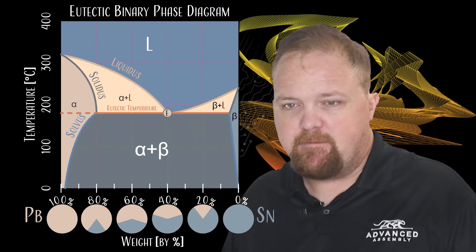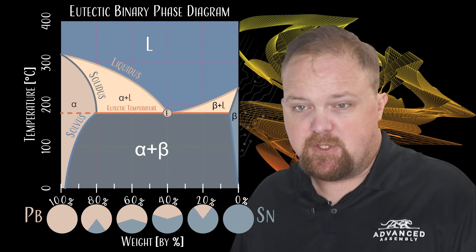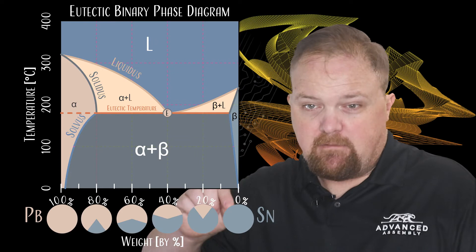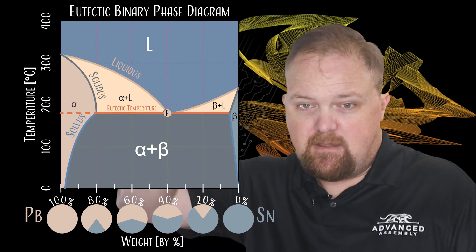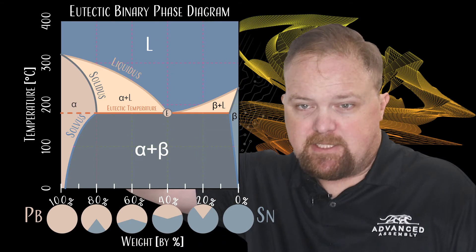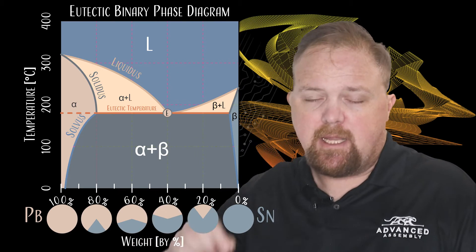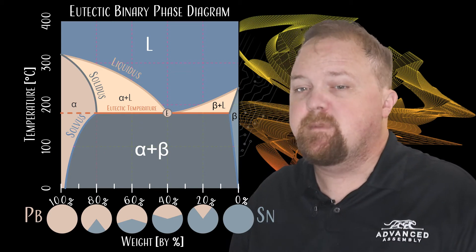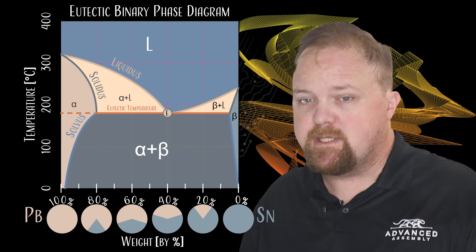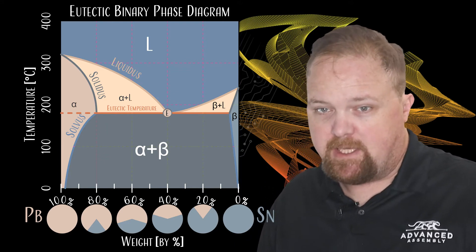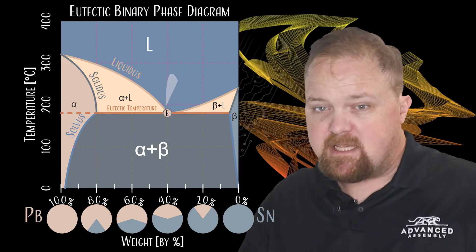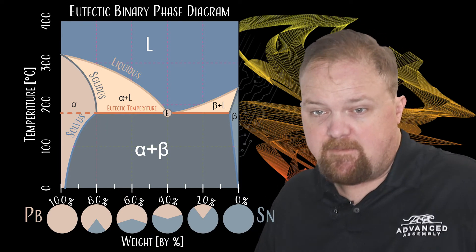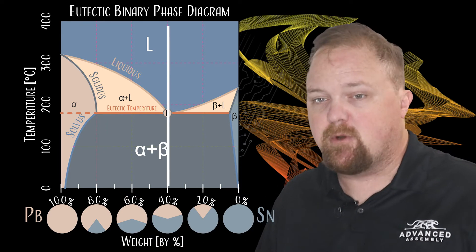Binary phase diagrams often show the phases of lead-tin mixtures based on mass ratio and temperature. As you follow a line vertically up the diagram, you'll see that it does not pass directly from solid to liquid, but crosses through a third phase. At a very particular ratio of materials, the solidus and liquidus temperatures meet at the eutectic point, the slush paste phase completely disappears, and the alloy transitions directly from the solid phase to the liquid phase in an isothermal process.